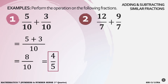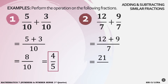Number 2. We have 12 over 7 plus 9 over 7. Again, we are dealing with similar fractions. So we will just combine the numerators: 12 plus 9 over 7. 12 plus 9 is equal to 21. Copy the denominator, 7. And then simplify our answer. 21 divided by 7 is equal to 3. And that's our answer.